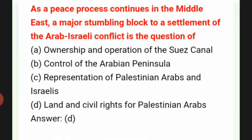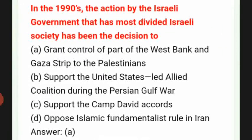As the peace process continues in the Middle East, a major stumbling block to a settlement of the Arab-Israeli conflict is the question of land and civil rights for Palestinian Arabs. In the 1990s, the action by the Israeli government that most divided Israeli society was the decision to grant control of part of the West Bank and Gaza Strip to the Palestinians.